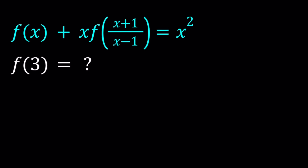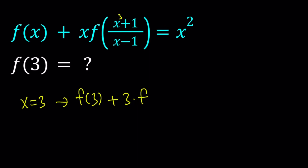To find f of 3, first I'm going to replace x with 3. That gives me f of 3 plus 3 times f of 3 plus 1 divided by 3 minus 1, which gives me 4 over 2, which is 2. So that is going to be f of 2 equals 3 squared which is 9.